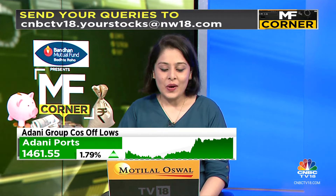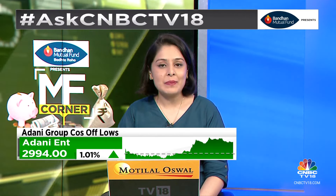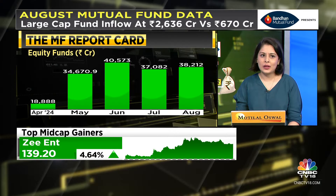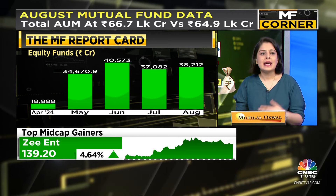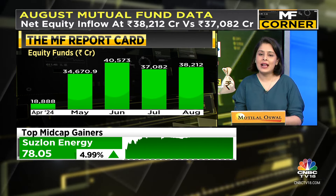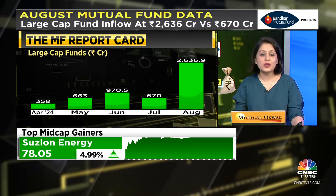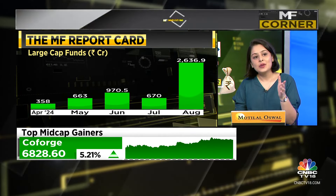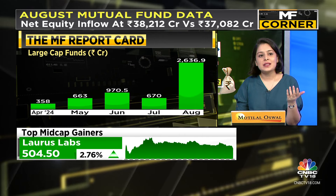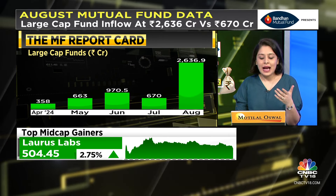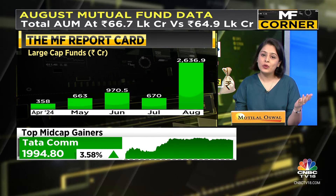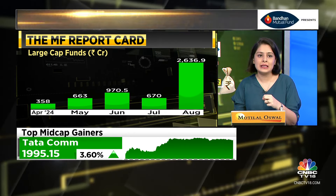Moving on to the mutual fund data for the month of August: overall equity flows came in at ₹38,212 crore, a slight uptick on a month-on-month basis, though coming off the big June numbers that followed a massive rally in equities post-elections. The big standout number is large cap funds, which saw an inflow of ₹2,636.9 crore — a massive comeback compared to last year when large caps were seeing outflows while mid and small caps were doing well.